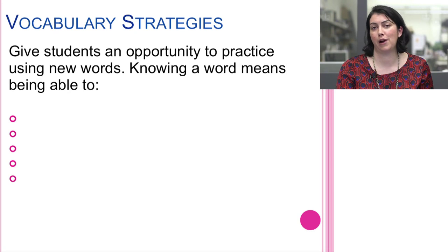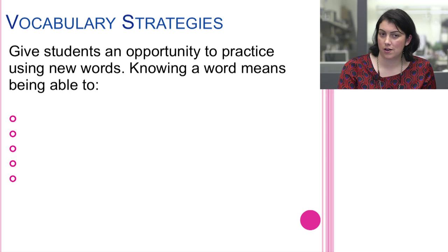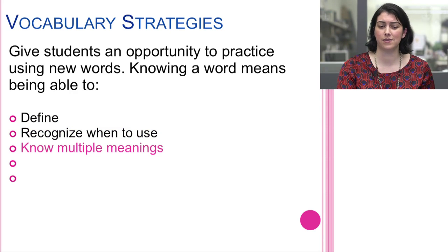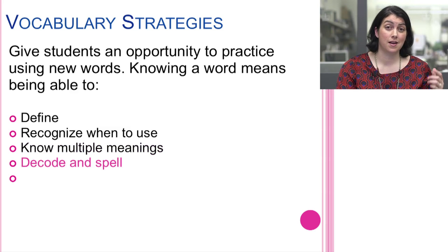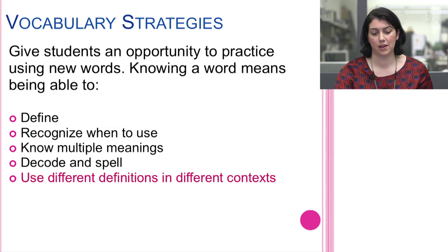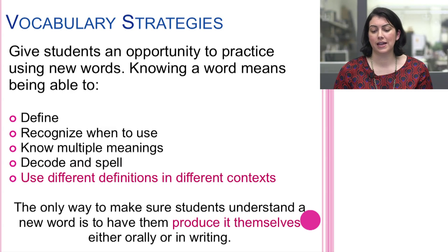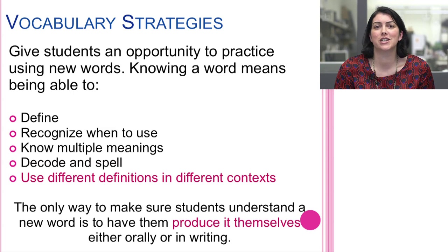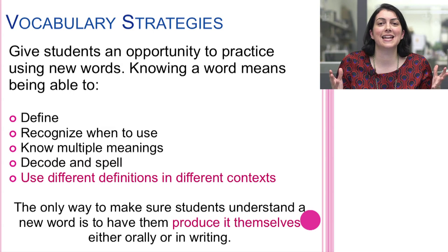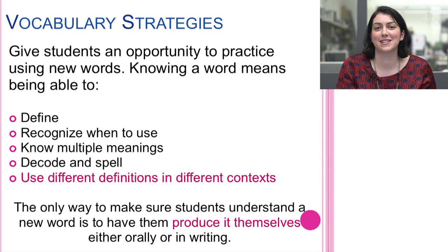We want to give students opportunities to practice new words. Knowing a word means being able to define it, recognize when to use it, understand its multiple meanings, both decode it and spell it, and use different definitions in different contexts — that's mastery. The only way to make sure students understand a new word is to have them produce it themselves, and that needs to be done in a very safe learning environment. I love when a student creates a word that doesn't exist in English but demonstrates they're trying — perhaps adding a suffix that doesn't go on that root word, but showing real application and understanding.